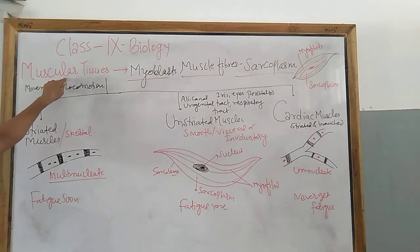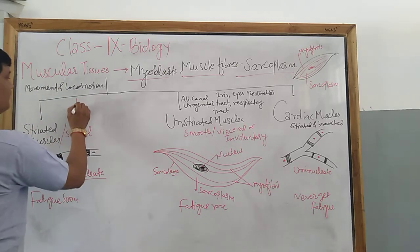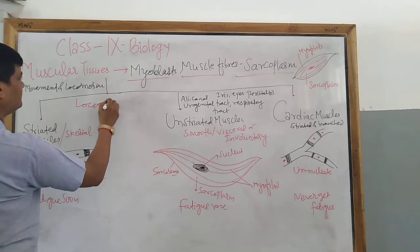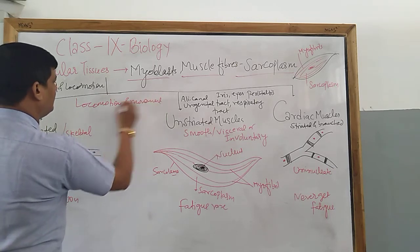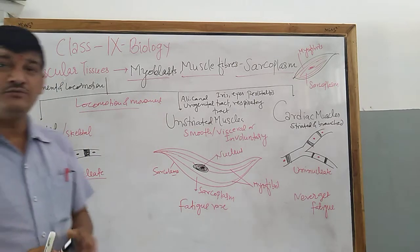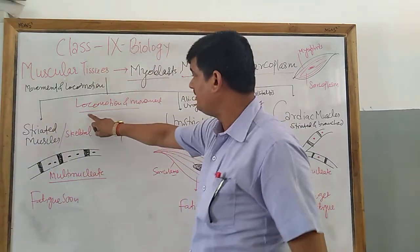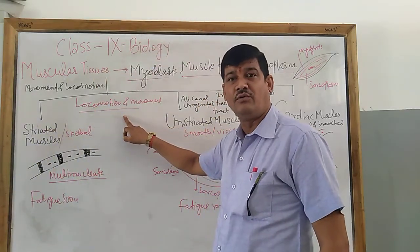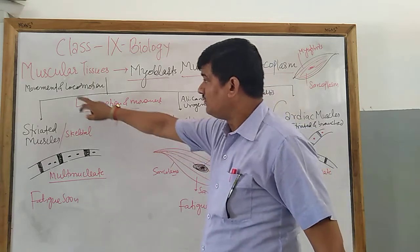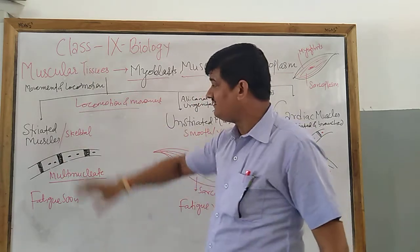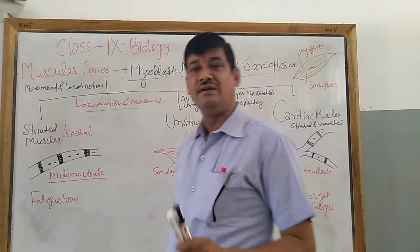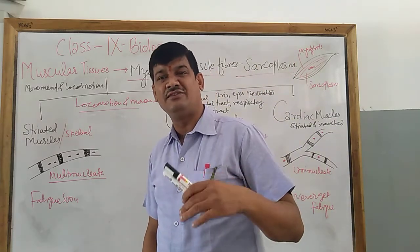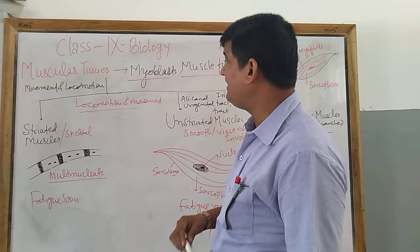Muscular tissues are a type of tissue which brings two things: locomotion and movement. Muscular tissue is responsible for bringing locomotion and movement to the body and its body parts. It gives the power of locomotion and movement to body parts because they are made up of specialized cells.